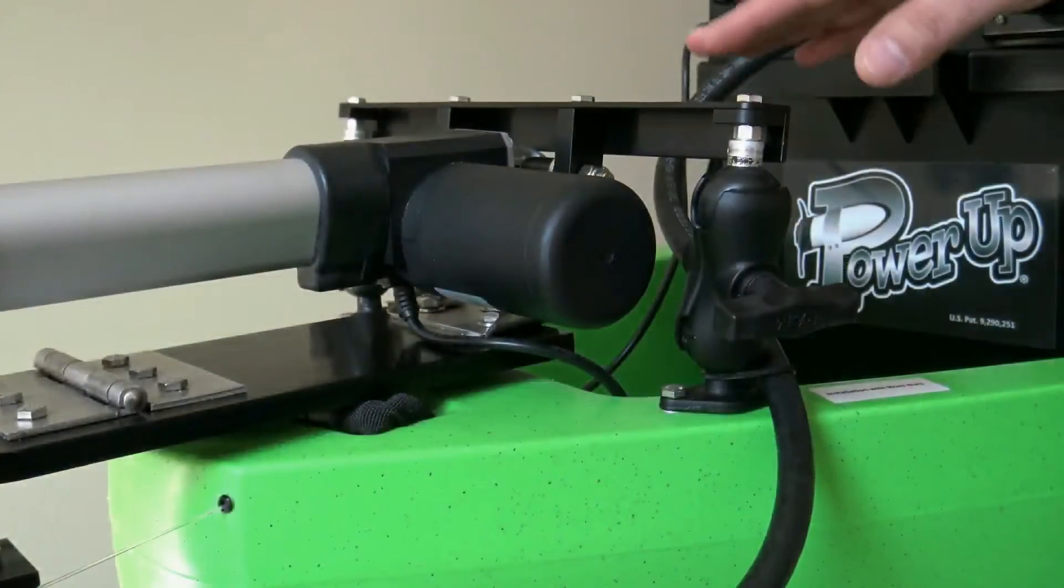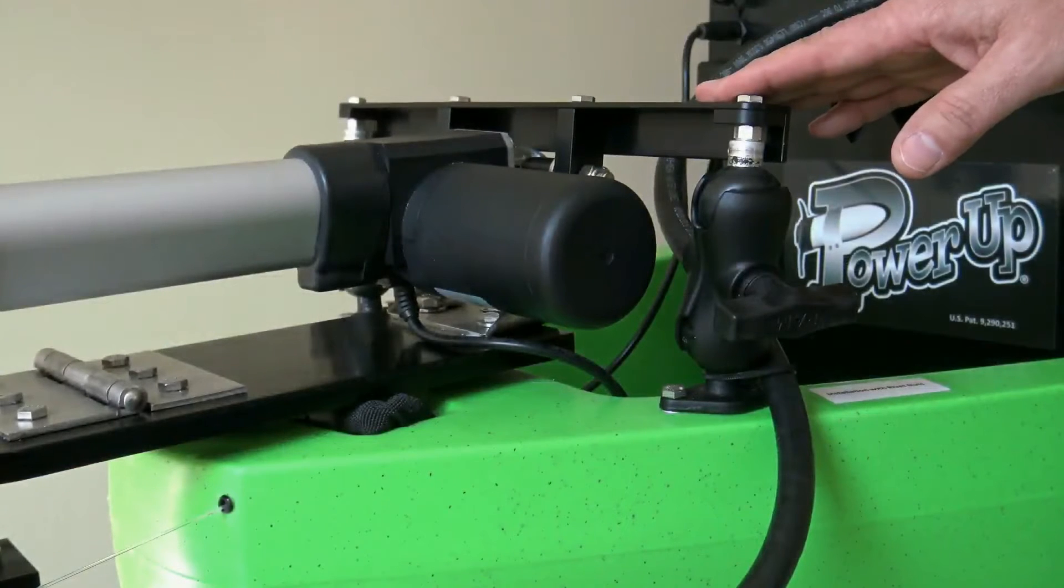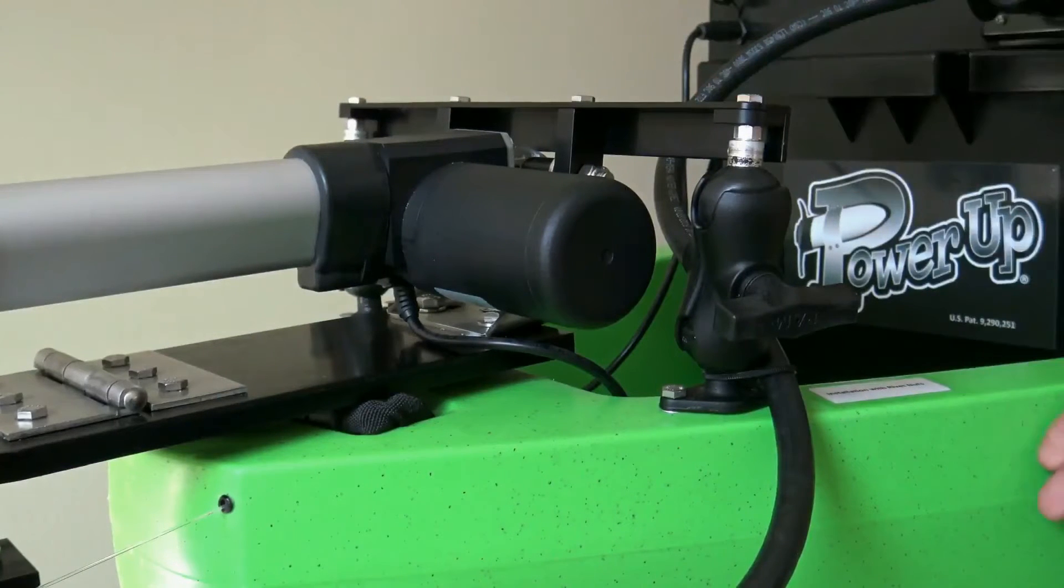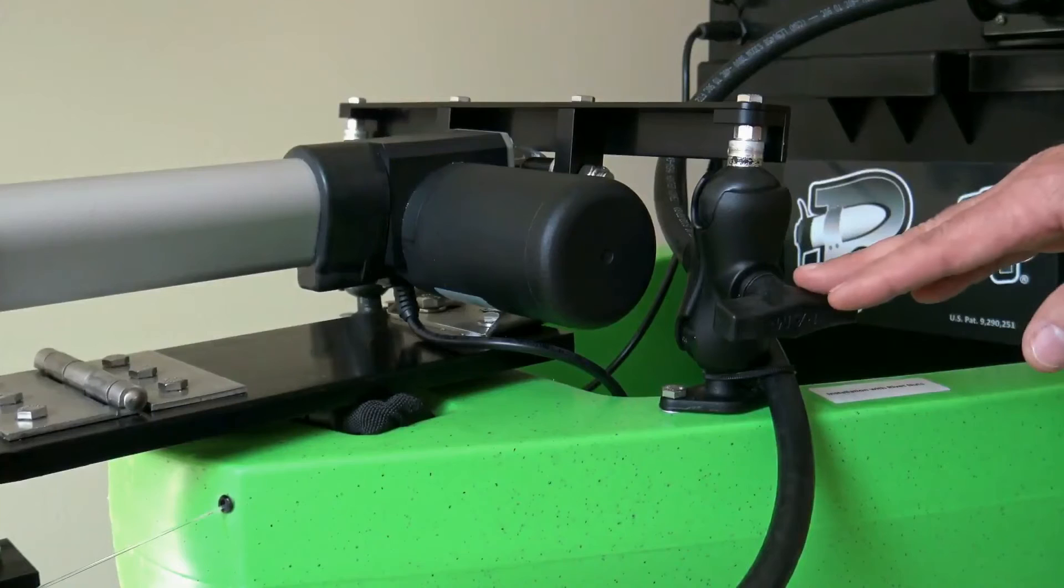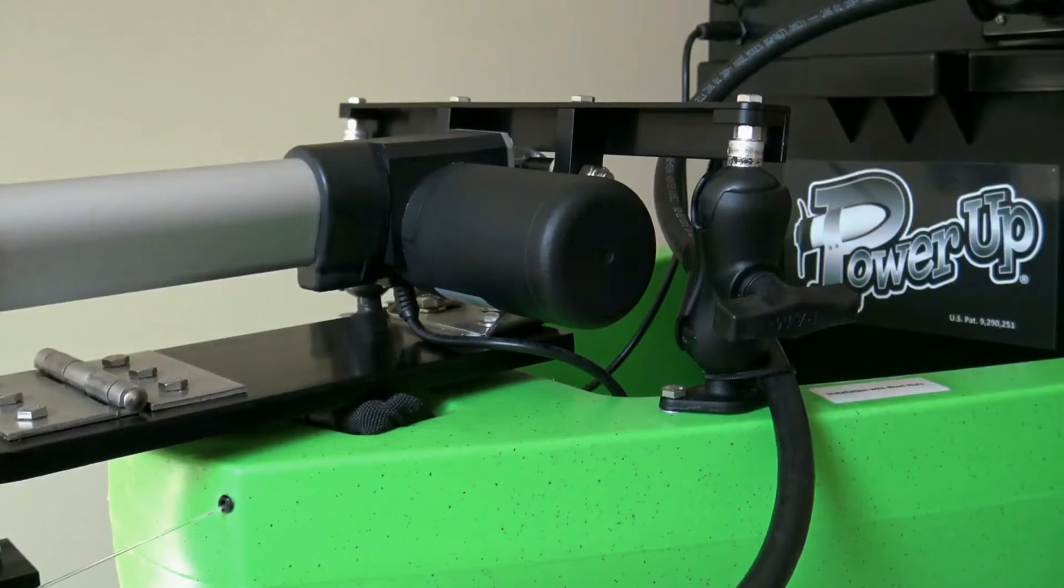The mounting bar is the most significant improvement to the new mount. It attaches the entire mount to the kayak via dual ball and socket attachments by Ram Mounts. This feature now provides universal adaptability to the stern of any kayak.